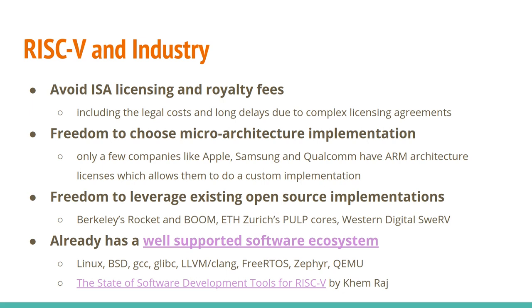There's already critical mass for software support with RISC-V. Linux, BSD, GCC, glibc, and Clang all support RISC-V. Real-time operating systems like FreeRTOS and Zephyr support RISC-V. QEMU supports emulating RISC-V as well. There's a GitHub repo where RISC-V International keeps a list of the current state for all different languages, libraries, and operating systems with regards to RISC-V.